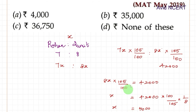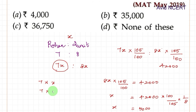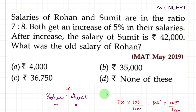Since we know x, we can substitute into 7x, which is 7 times x. That is 7 times 5,000, because we found x is 5,000, which equals 35,000. So Rohan's old salary before the increment is 35,000.